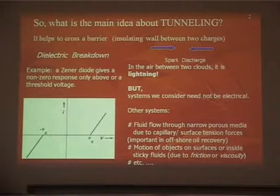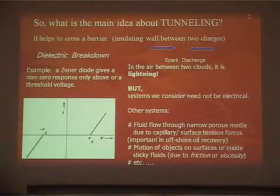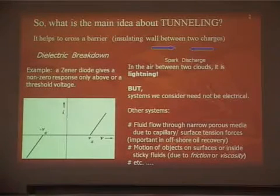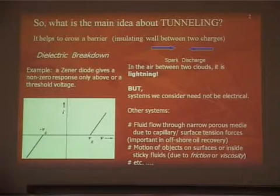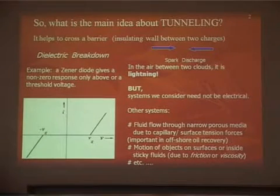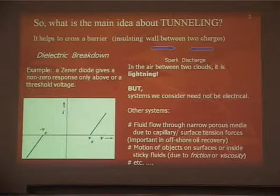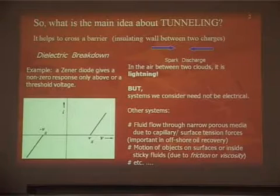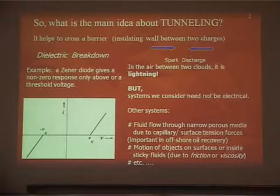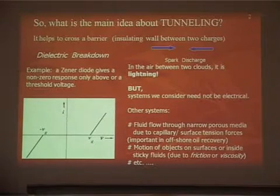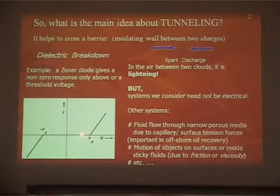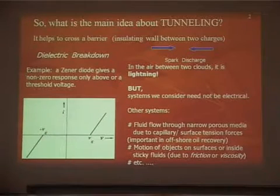In many such systems — for example, the Zener diode, where quantum mechanics with phase may not be necessary — the tunneling part is taken. The Zener diode is one such situation with a threshold. This is semi-classical; it does not have any phase information. The most important part is to have a threshold.